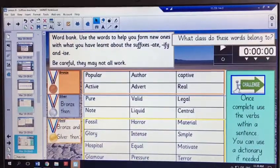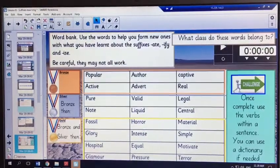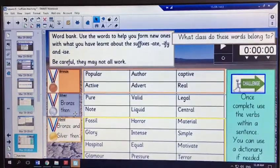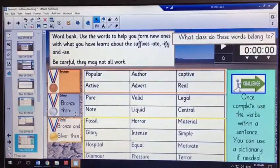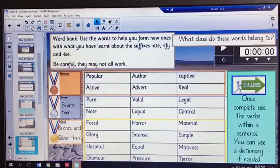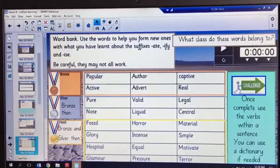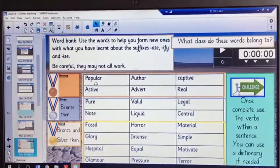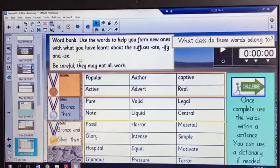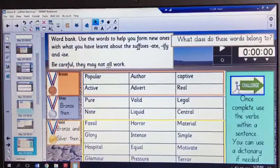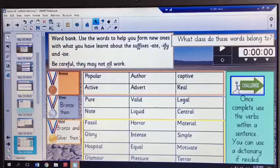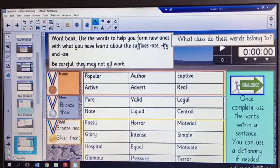Right, so we're going to do a task now. There's bronze, silver and gold tasks, and you can select any of these based on how confident you are feeling. Use the words to help you form new ones with what you have learned about suffixes: -ate, -ify and -ise. So we're going to be changing these nouns or adjectives into verbs by adding those three suffixes. Be very careful because they may not all work. Now just say them out loud before making any decision. Because even though you might not know what they mean, you might have already heard of them, and so some of them might not sound quite right. So you may need to say it out loud and see if it makes sense.